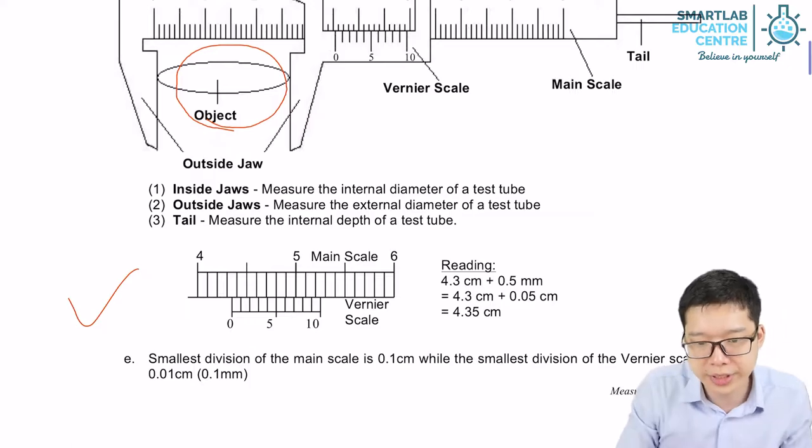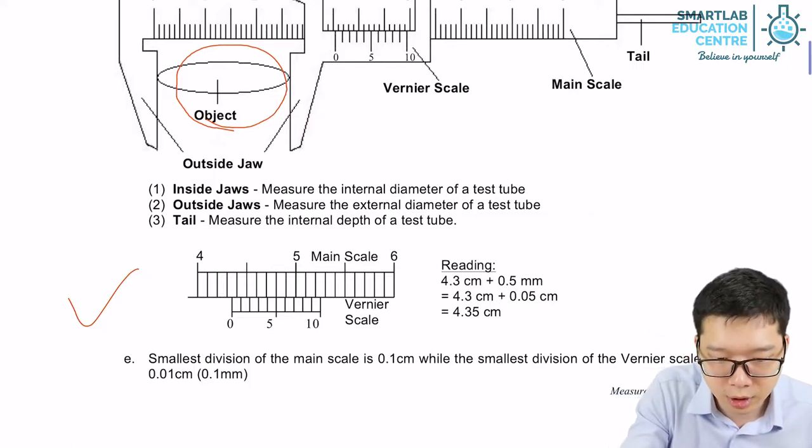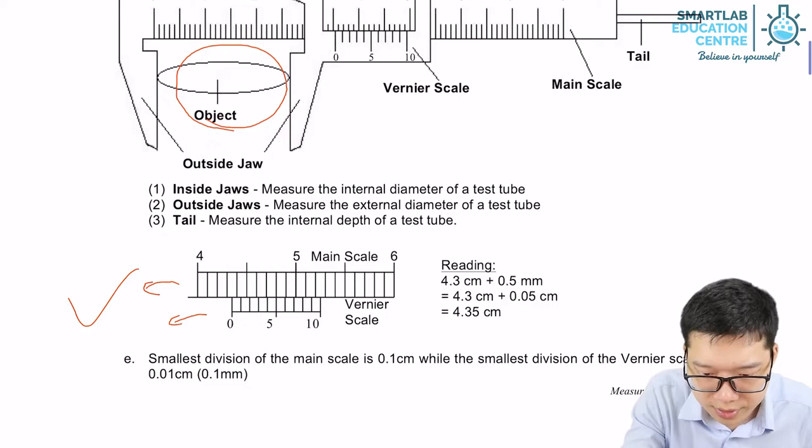Let's look at the simplified version. The top one is the main scale. The bottom one is the vernier scale.